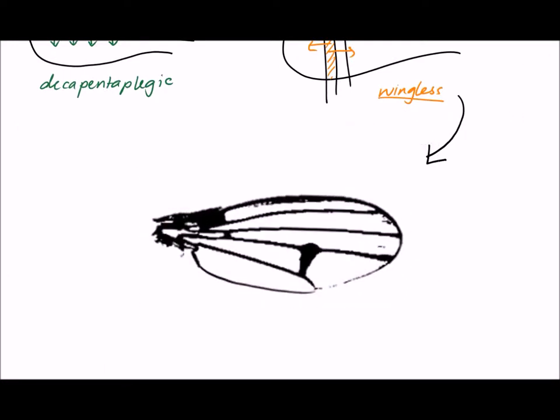These four morphogen gradients form the anterior and posterior, ventral and dorsal, and proximal and distal compartments of the Drosophila wing.